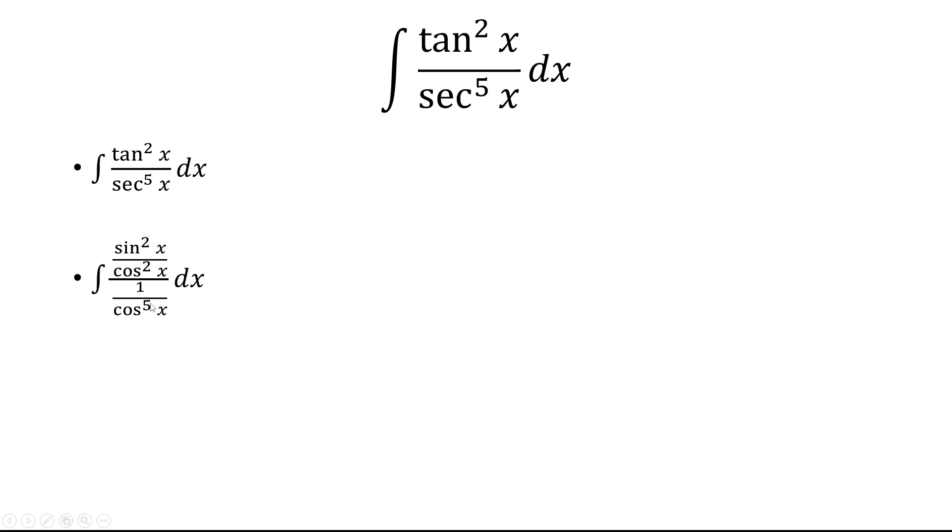And when we divide by fractions, we multiply by the reciprocal. So we're going to multiply by cosine to the fifth over one. So we have cosine to the fifth over cosine squared. That's going to give us cosine cubed. So now we simplify this into sine squared times cosine cubed.